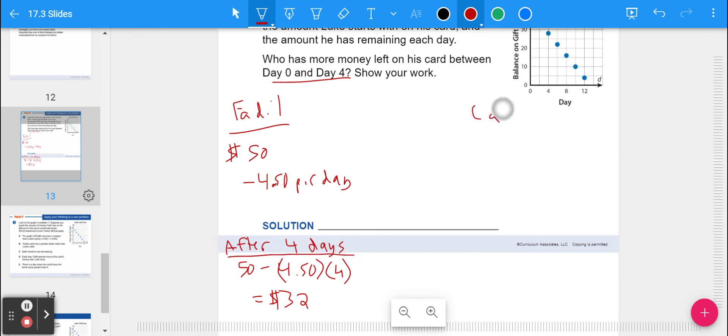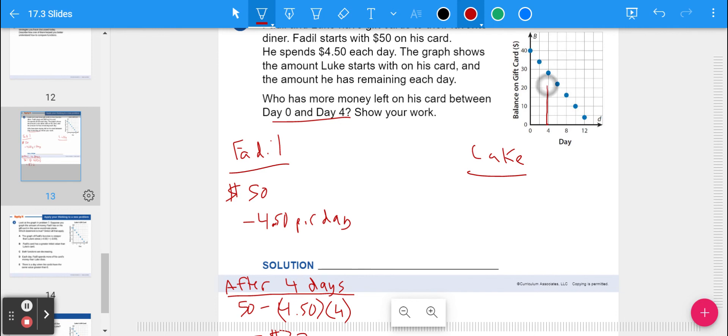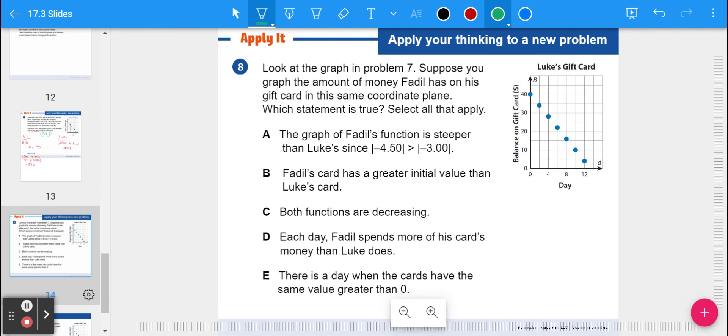Whereas Luke, you can look at the graph and at four days, we go up here. After four days, it says about $25, $28, we'll say. It's definitely under $30. So who has more money left? The answer for that one is Fidel does. But it might not always be that case. I know Luke starts with less money, but I don't think it goes down by quite as much. So we're going to look at that a little bit farther.